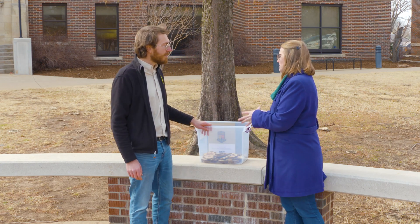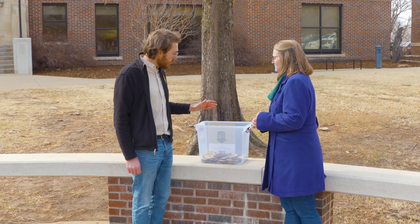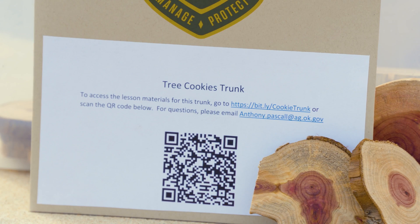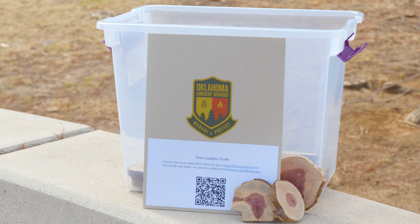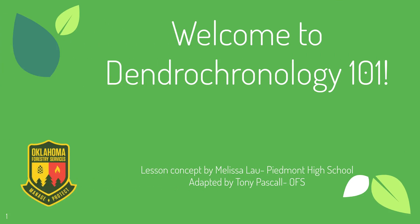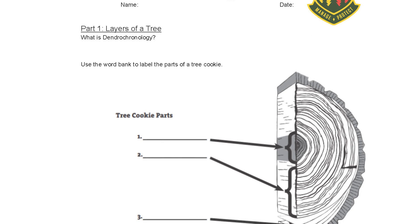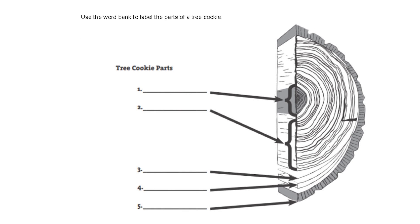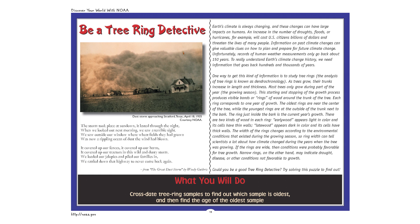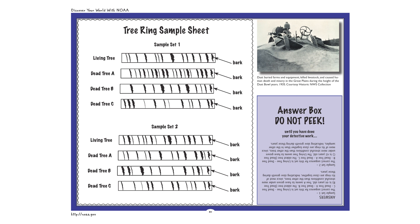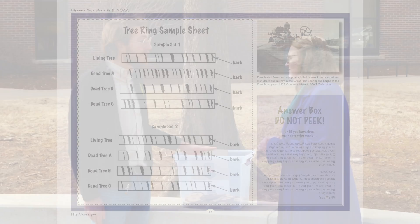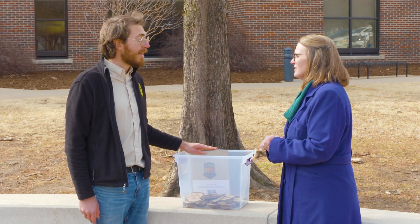This trunk is built for third through eighth grade, and there are science and math student materials for you to take into your classroom and print. There are worksheets and PowerPoints that teachers will have access to as soon as they check this out. So somebody who might not know anything about trees has everything here to walk them through the process of learning about dendrochronology. It's aligned to state standards for math and science.